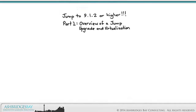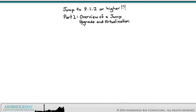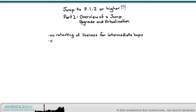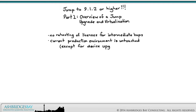A Jump migration has many advantages. No re-hosting of licenses for intermediate hops — all you need is a license for your 9.1.2 or higher software. The current production environment is untouched except for device upgrades. Cisco recommends upgrading phones and other devices to the target loads in advance of the cutover to minimize the maintenance window.